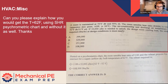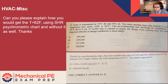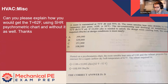Can you explain how you would get T equals 62 using the psychometric chart, and without it as well? I'll pass on the second part — I don't think you can do this problem without the psychometric chart. If you find a way, please let me know. But I will show you how you might approach it using the psychometric chart.